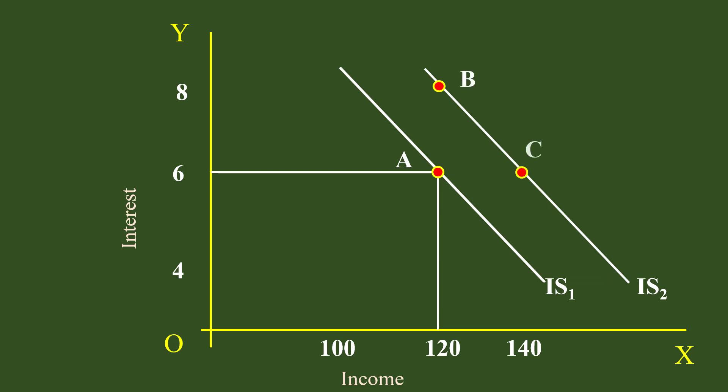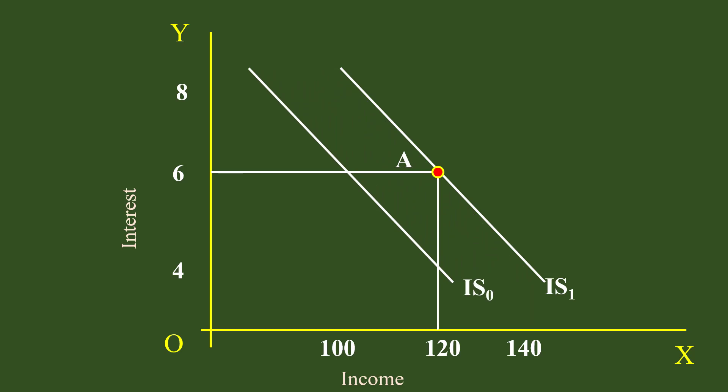IS2 passes through points B and C. B represents Rs.120 income and 8% interest — same income at a higher interest. C represents Rs.140 income and 6% interest — higher income at the same interest. The curve IS1 now moves to the left due to a decrease in autonomous investment. IS0 is the new IS curve. At each interest rate, income decreases. This is known as leftward shift.